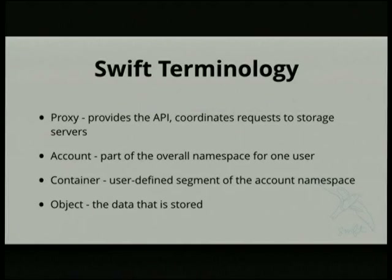An account in Swift is a logical division of the namespace. Generally you're given an account when you sign up for a cloud service or use an internal Swift deployment — your user is tied to a particular Swift account. An account keeps a listing of containers, and containers keep a listing of objects. Accounts and containers keep a listing of what's inside them and a little metadata. The objects are what actually store the data: when you upload an image, a movie, or backups, that's stored in an object. The container automatically tracks a listing, and the account knows total bytes aggregated across the account.